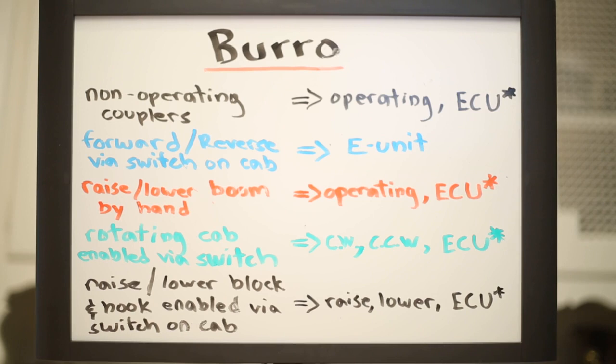I'd like to raise and lower the boom electronically, once again with the electronic control unit. I'd like to rotate the cab clockwise and counterclockwise using the electronic control unit. And finally, I'd like to raise and lower the block and hook using the electronic control unit.